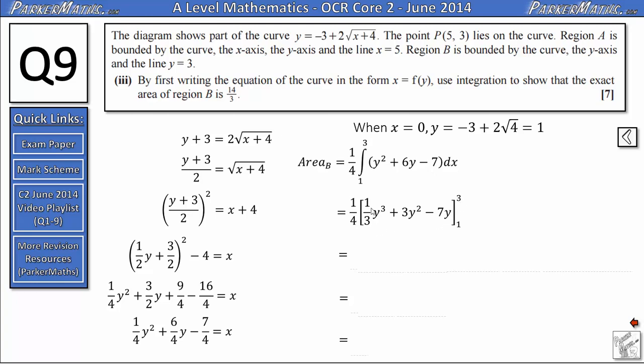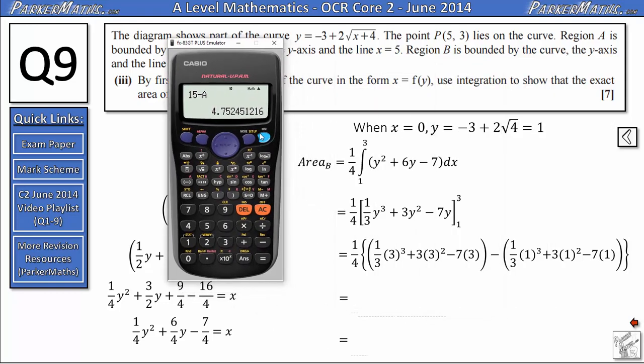From here, I need to substitute my limits into this equation, so I get 1 quarter of a third multiplied by 3 cubed, so I'm substituting in the first limit, plus 3 lots of 3 squared, minus 7 lots of 3. In the second bracket, I get 1 third of 1 cubed, plus 3 lots of 1 squared, minus 7 lots of 1. Now, I could just put all of this into my calculator and get an answer out, but I'm going to show you how you can use stored values in your calculator to make things a little bit easier. So, before I put anything into my calculator, I'm going to store the first limit, which is 3. To do that, I'm going to put 3 into my calculator and press equal, so that's the current answer, and then shift, store, and I'm going to store it as a.